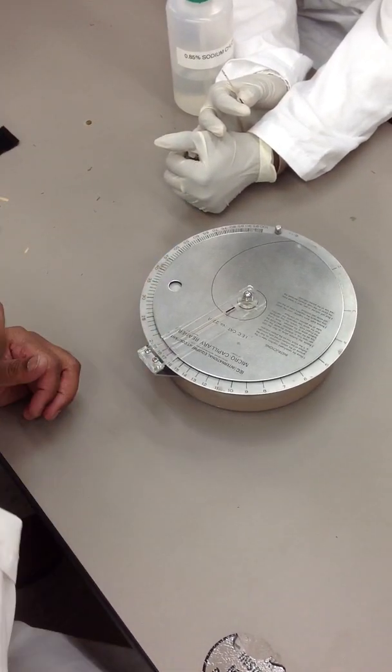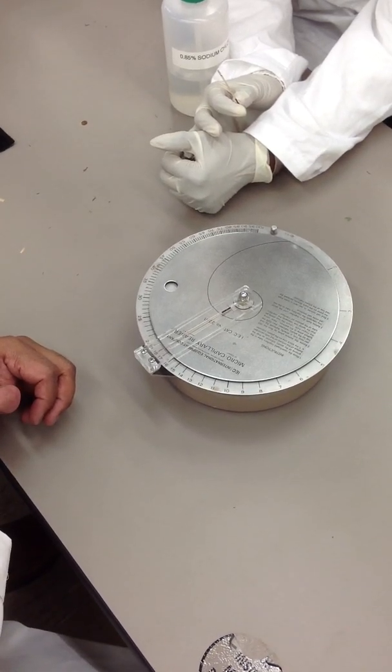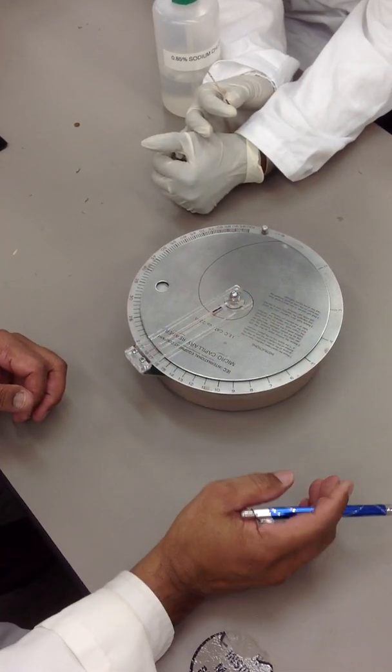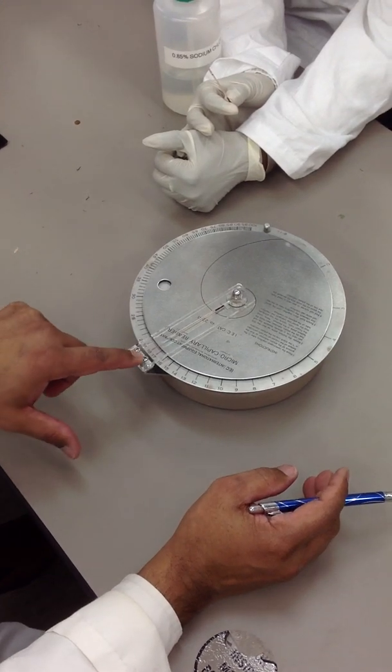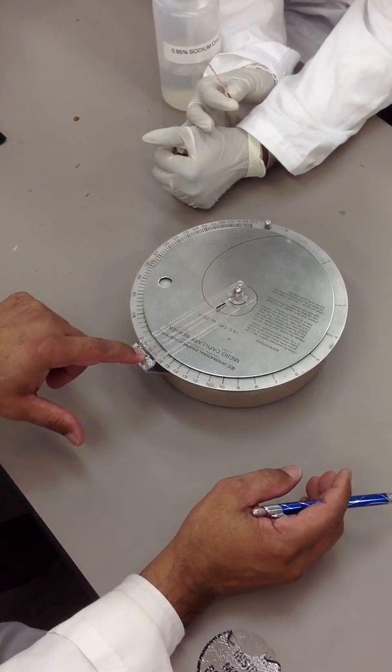And that's because the cell's been there for a while. This is not for hematocrit. But we use it just to practice. Okay? So, this is... That's all you have to do is read the number on the red line. And that's your hematocrit.